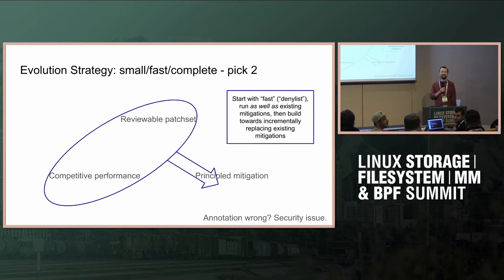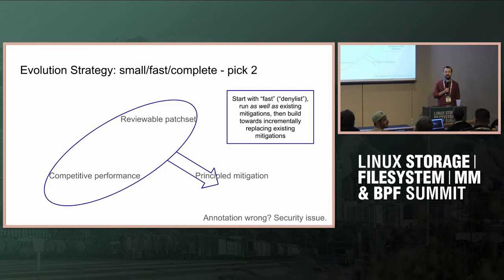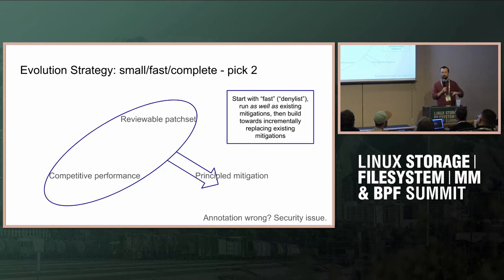It really depends who you talk to: security people say security matters; net dev people say if it's not performing, it doesn't matter. ASI is pointless if it's not both in the end — it's just a question of where we start. If you don't have something that performs from the start, you're not learning lessons about how to make things fast or seeing how it impacts real workloads. But also: if it's slow, people are less likely to use it and test it. The motivation for people to use it is if it's performant.